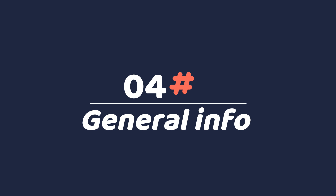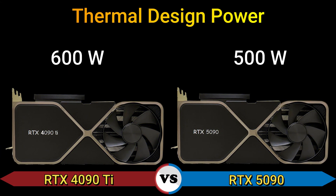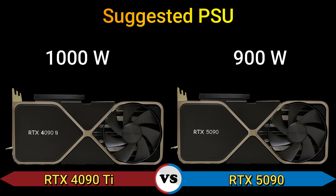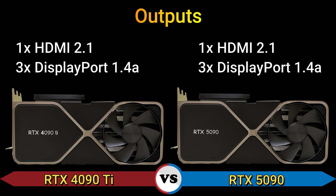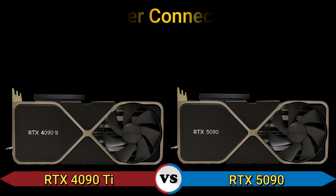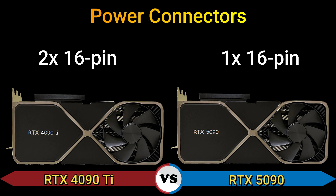Part 4 — General information. Thermal design power: 600W and 500W. Suggested PSU: 1000W and 900W. Outputs: 1x HDMI 2.1, 3x DisplayPort 1.4a. Power connectors: 2x 16-pin and 1x 16-pin.